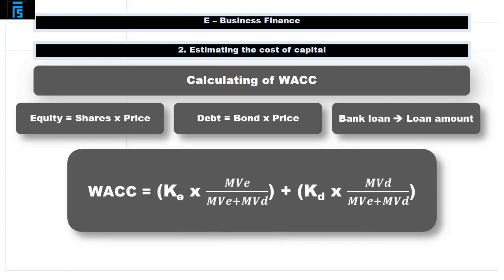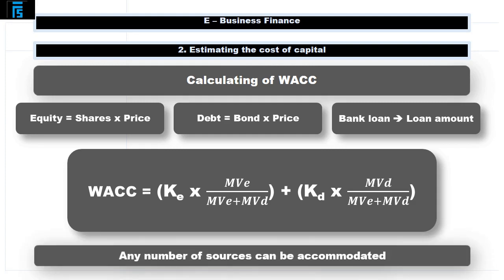For equity, this equates to the number of shares in issue multiplied by the share price, whilst for debt, this will be the number of bonds multiplied by the quoted price per bond. Remember that this quoted price can also be expressed as a percentage of the nominal value. Finally, if one of the sources is a bank loan, it does not have a market value — it cannot be traded — and so the loan amount is used instead.